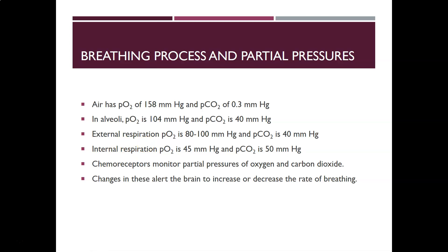When arterial blood reaches the tissue capillary bed, internal respiration occurs — the exchange of oxygen delivery and CO2 pickup at the tissues. Since tissues use up oxygen, the PO2 drops from 80–100 down to 45 mmHg, and PCO2 climbs to about 50 mmHg as cells metabolize and produce CO2. These are the expected venous blood readings, which then return via venous blood to the heart and lungs to restart the cycle.